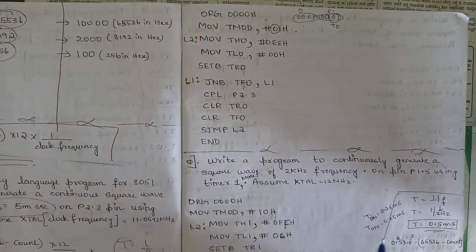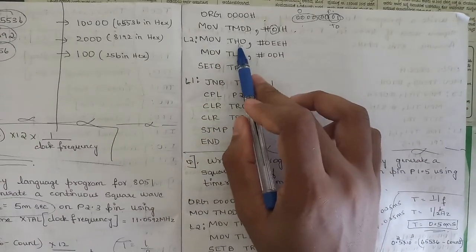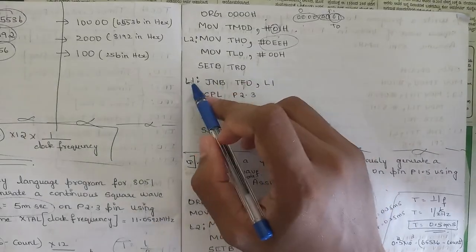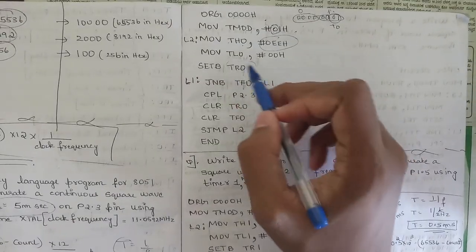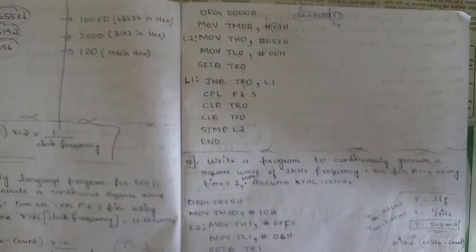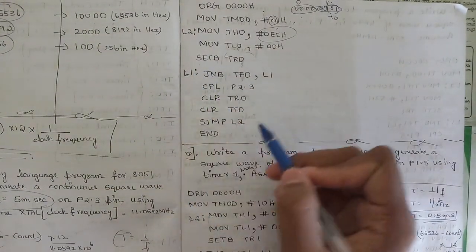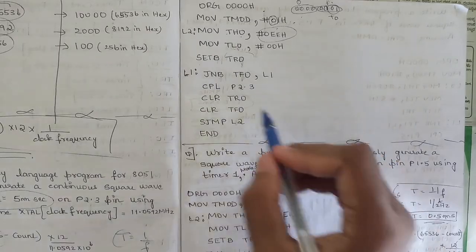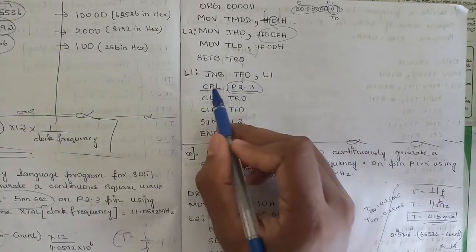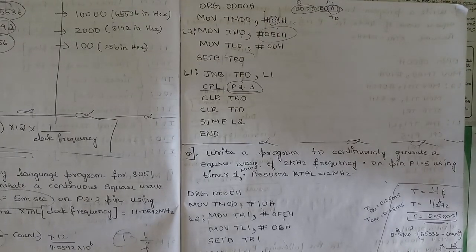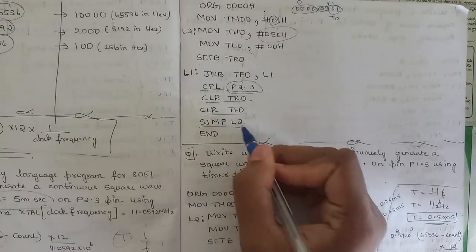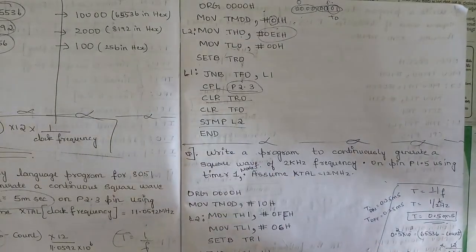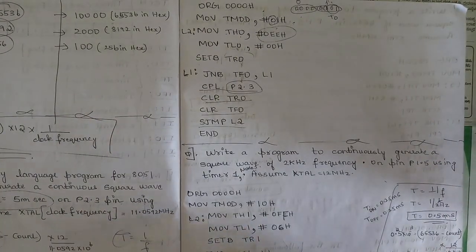Then MOV TH0, #high_byte and MOV TL0, #low_byte to load the MSB and LSB count values. SETB TR0 starts the timer. Open a label L1: JNB TF0, L1 — loop until the timer flag is set. Then CPL P2.3 to toggle port 2.3, CLR TR0, CLR TF0, and SJMP L2 to repeat continuously. End the program.